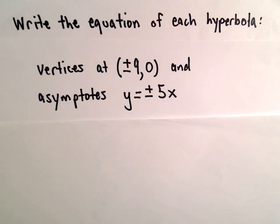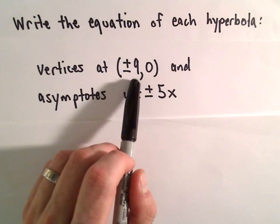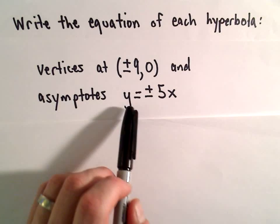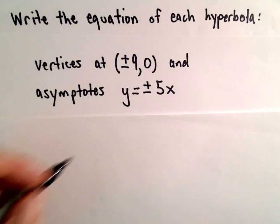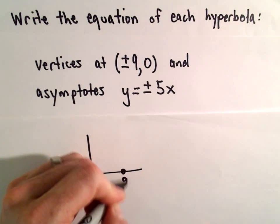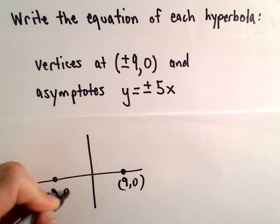Okay, here we're going to find an equation of a hyperbola that has vertices at positive and negative 9, 0, and the asymptotes of y equals positive and negative 5x. Okay, so our vertices are at 9, 0 and negative 9, 0.